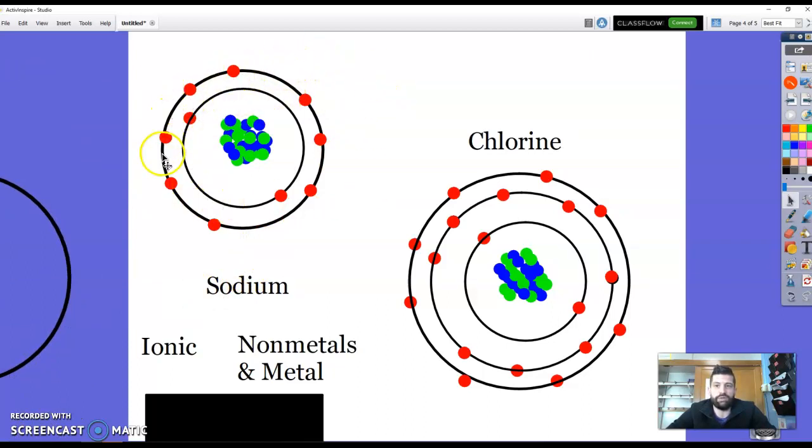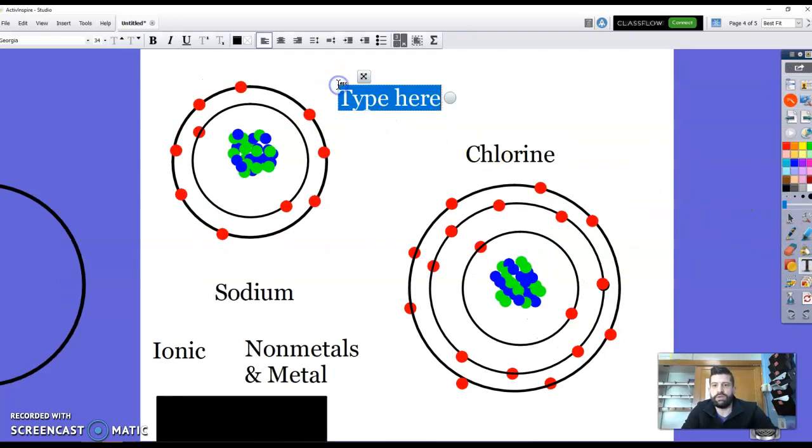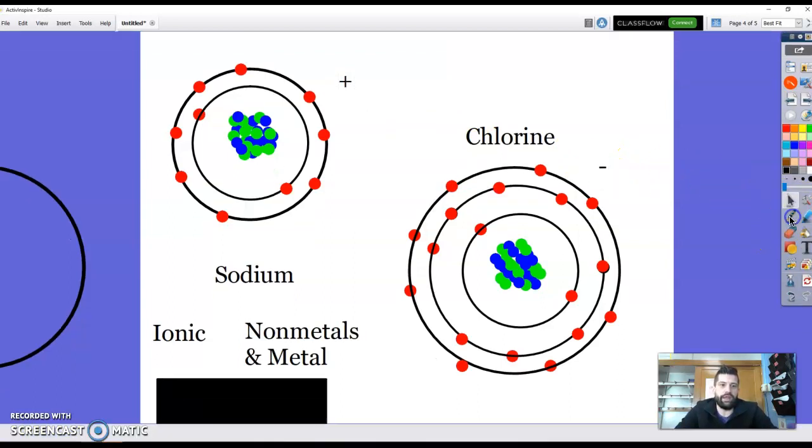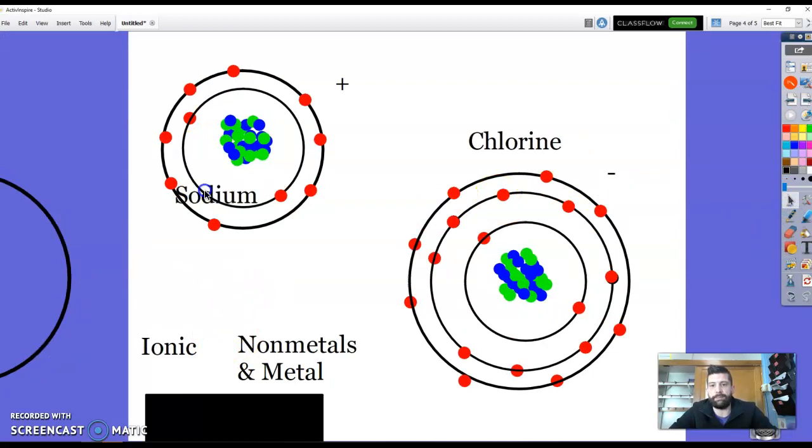Sodium loses an electron, so this outer ring is no longer important to it, because its outer ring is now the second one, and it has one, two, three, four, five, six, seven, eight. It's got eight in its outer ring. It's perfectly happy. But what happened is that now sodium has a positive charge. Chlorine now has a negative charge. And as we've learned with magnets, when we have opposite charges, they attract each other.